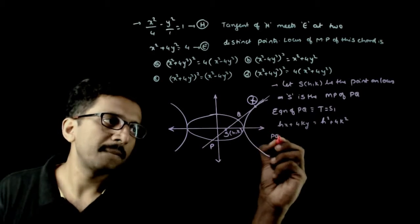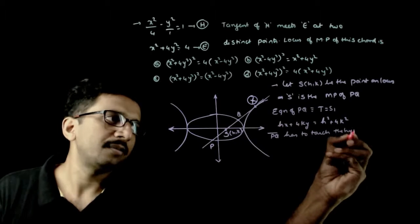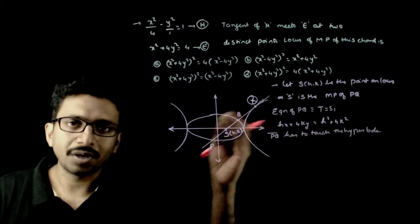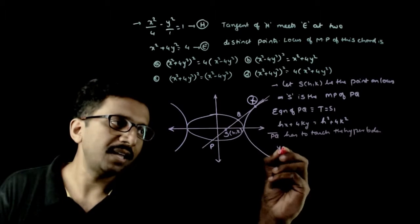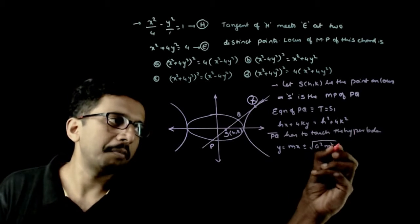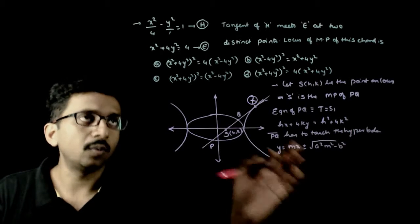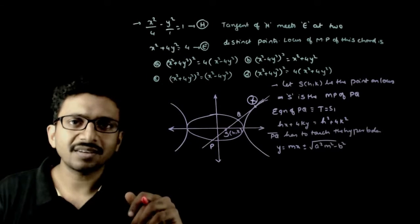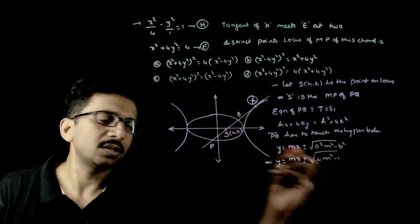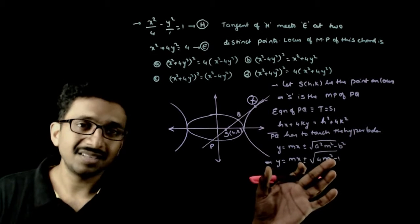Now this PQ has to be a tangent to the hyperbola. The general equation of a tangent to the hyperbola x²/a² - y²/b² = 1 is y = mx ± √(a²m² - b²). In this case, a² = 4, b² = 1, so the tangent is y = mx ± √(4m² - 1).